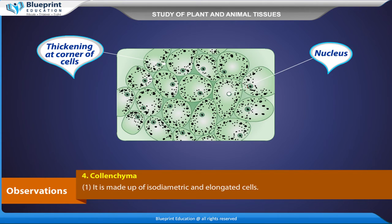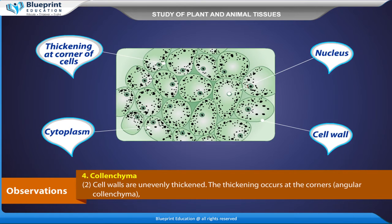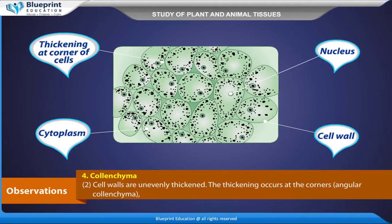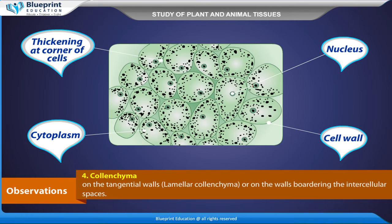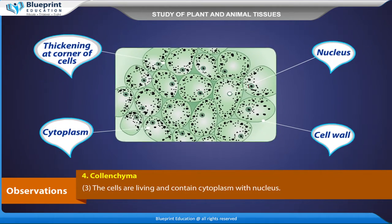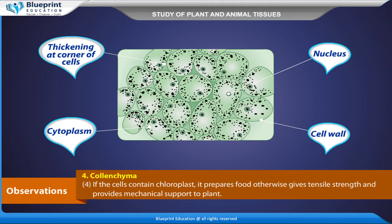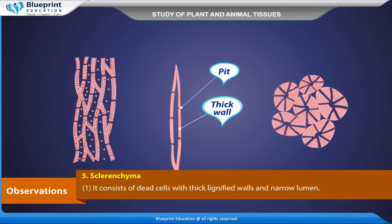Colenchyma: It is made up of isodiametric and elongated cells. Cell walls are unevenly thickened. The thickening occurs at the corners (angular colenchyma), on the tangential walls (lamellar colenchyma), or on the walls bordering the intercellular spaces. The cells are living and contain cytoplasm with nucleus. If cells contain chloroplasts, they prepare food; otherwise, they give tensile strength and provide mechanical support to the plant.